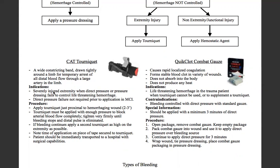The indication: severely injured extremity when direct pressure or pressure dressing fails to control life-threatening hemorrhage. Direct pressure failure is not required prior to application on a mass casualty incident. Procedure: apply the tourniquet just proximal to the hemorrhaging wound, about two to three inches. The tourniquet must be applied with enough pressure to block arterial blood flow completely. Tighten very firmly until bleeding stops and distal pulse is eliminated — that's very important.